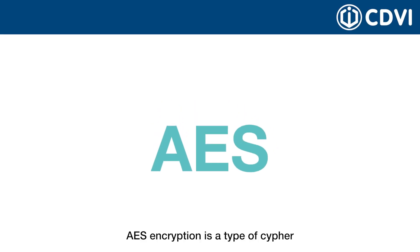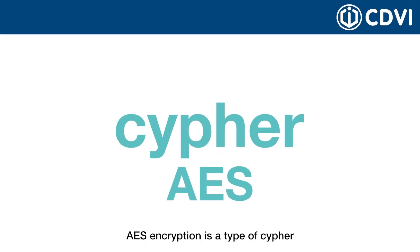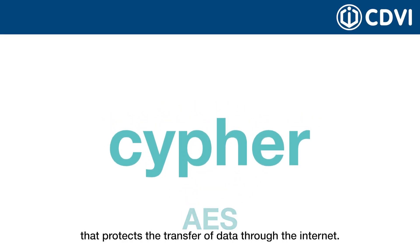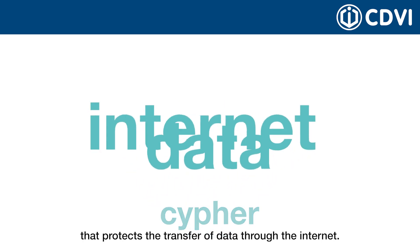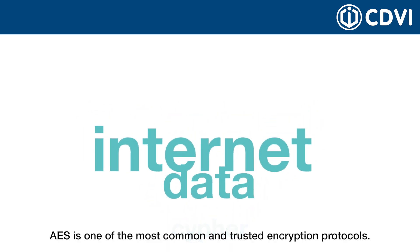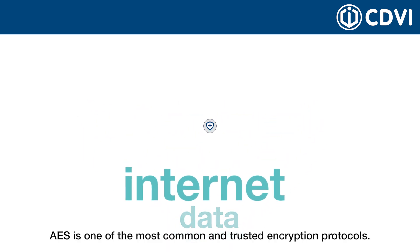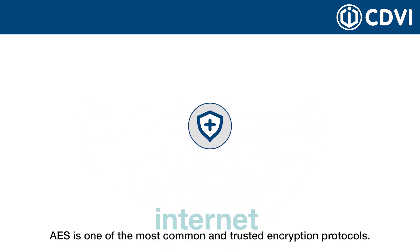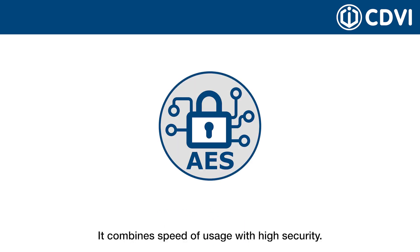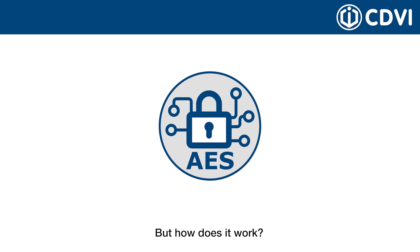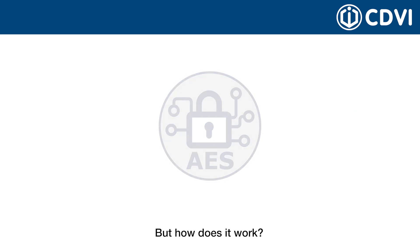AES encryption is a type of cipher that protects the transfer of data through the Internet. AES is one of the most common and trusted encryption protocols. It combines speed of usage with high security. But how does it work?